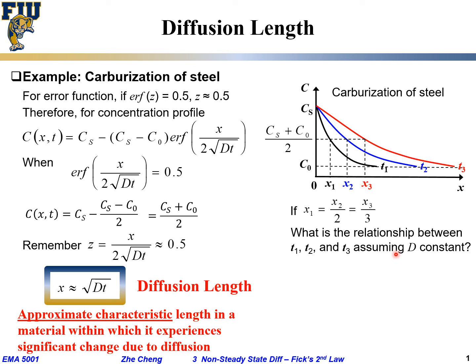Go back to our diffusion length concept. What is x1? x1 mathematically roughly, always remember it's roughly, square root of Dt1. What about x2? x2 is roughly square root of Dt2. What about x3? Similar. Remember, x1 is half of x2, one third of x3. So we are going to write something, square root of Dt1 is only half of square root of Dt2, it's only one third of square root of Dt3.